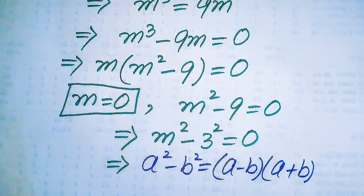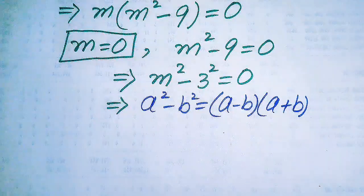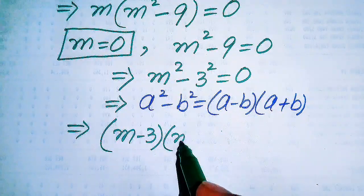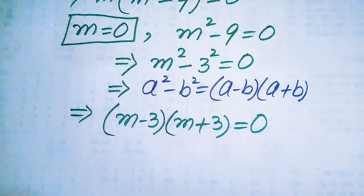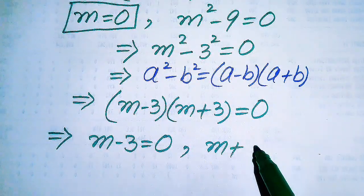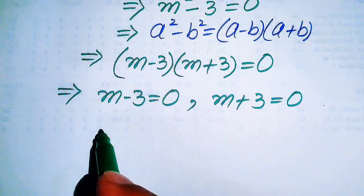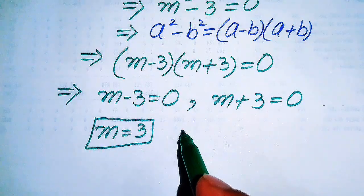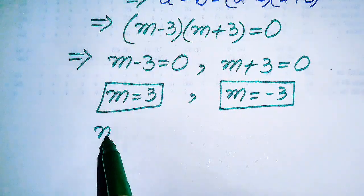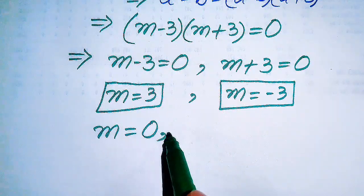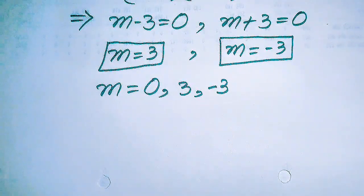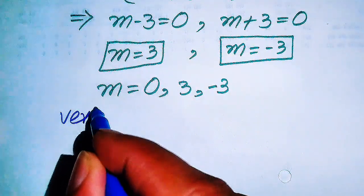According to this formula, with a equals m and b equals 3, we write the equation as m minus 3 times m plus 3 equals to 0. This gives two cases: m minus 3 equals to 0, giving m equals to 3, and m plus 3 equals to 0, giving m equals to minus 3. So we have three roots: m equals 0, m equals 3, and m equals minus 3.